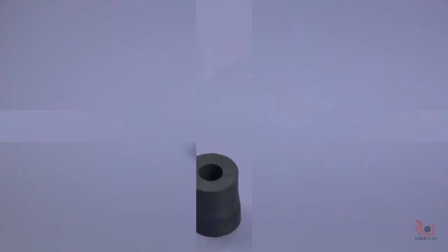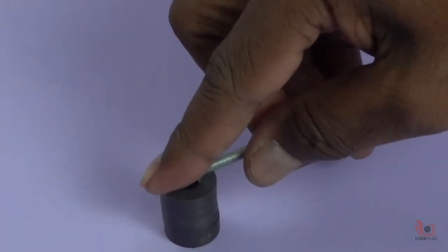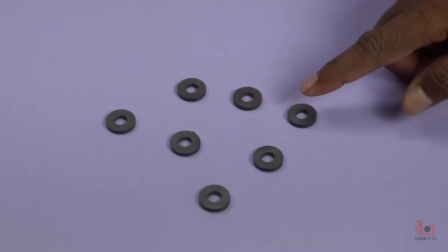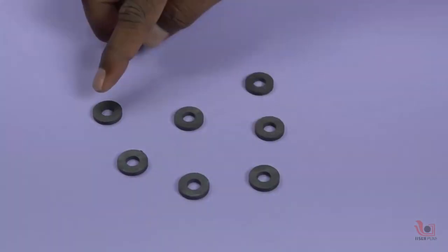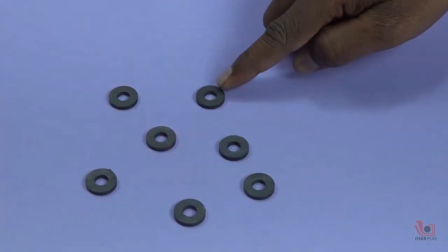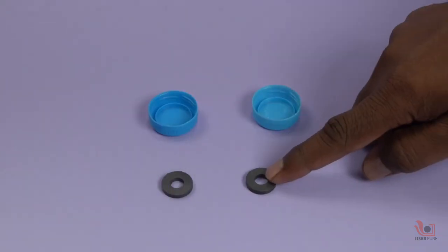Take a few magnets and arrange them in such a way that they repel each other. The similar poles of all magnets should face to one side.